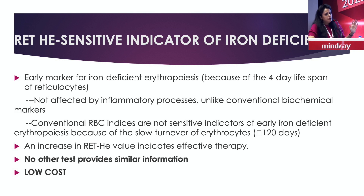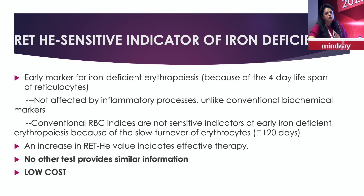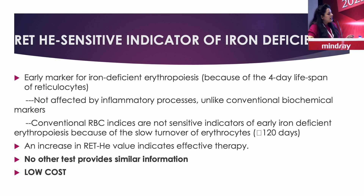We did a lot of data on normal CBCs and found CBC completely normal but only reticulocyte hemoglobin was low, and it correlated very well with ferritin values — indicating it was one of the earliest indicators of iron deficiency anemia. It is not affected by inflammatory processes like ferritin, and it's a very early indicator, unlike MCV and MCH which reflect changes only once the patient has real iron deficiency.